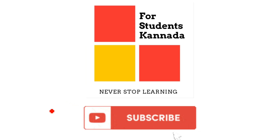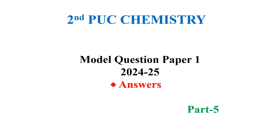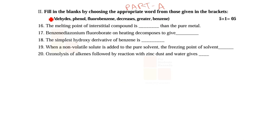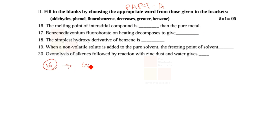Hi students, welcome back. This is second PUC chemistry model question paper solutions. Fill in the blanks: the melting point of interstitial compound is dash than the pure metal. The answer is: